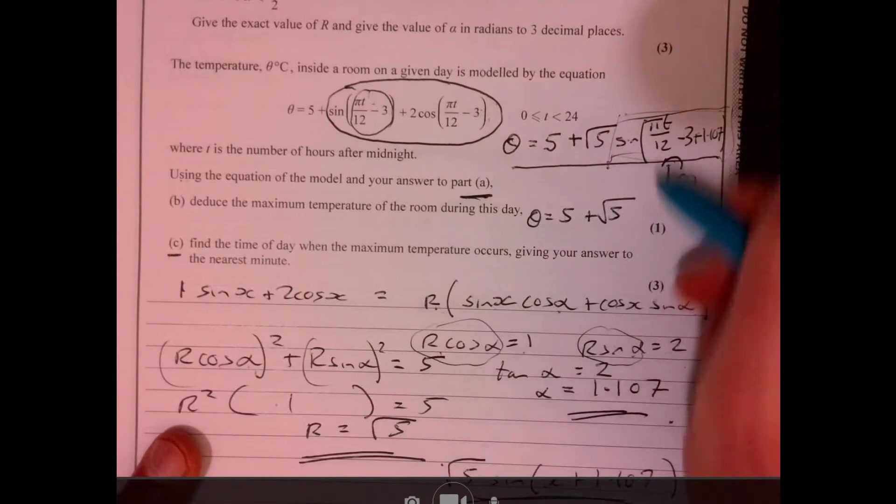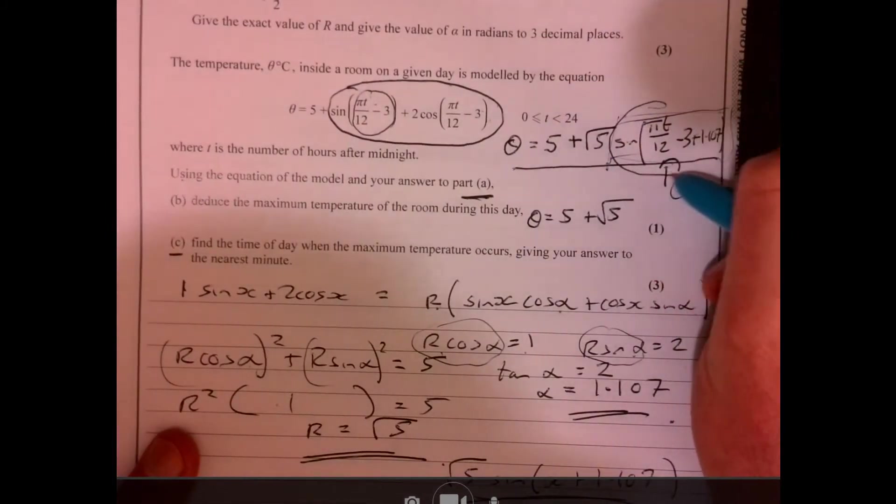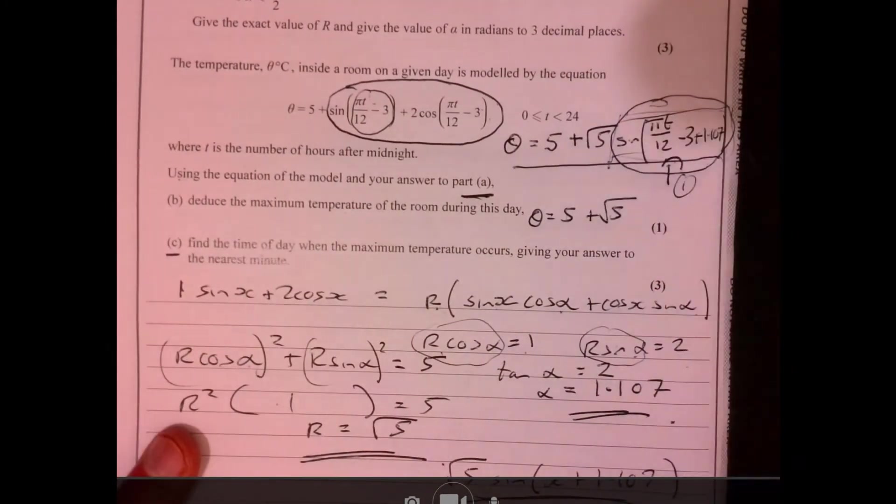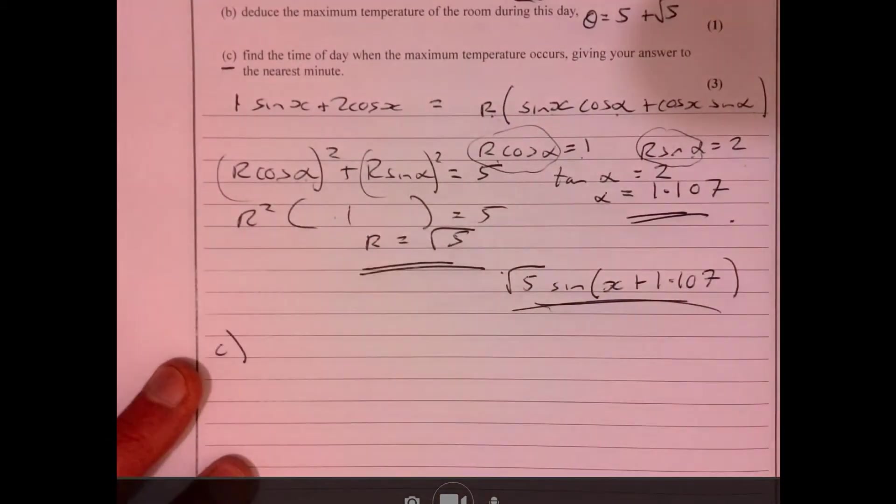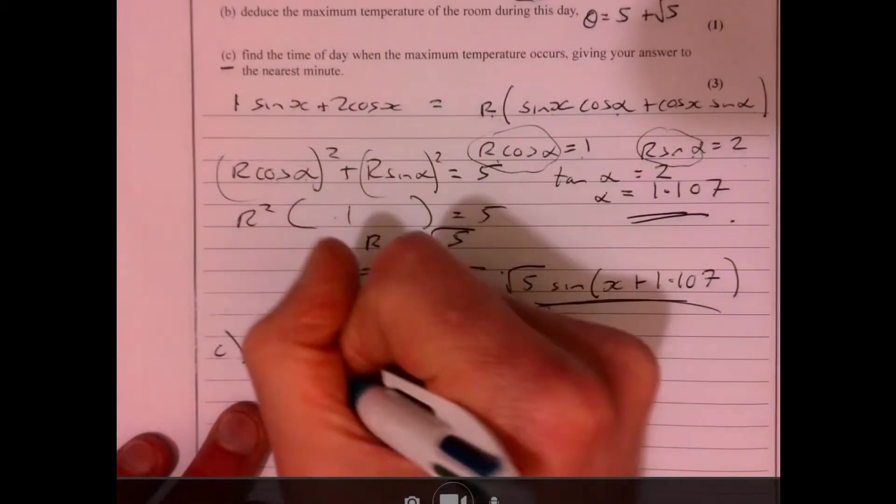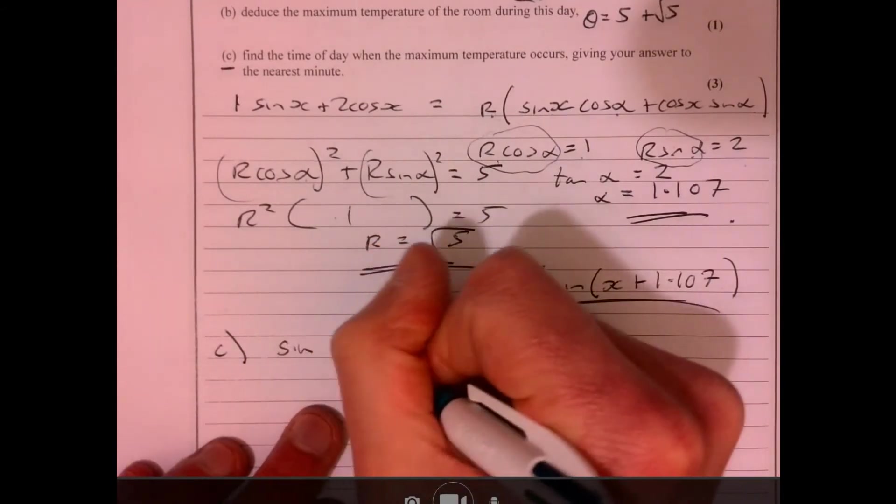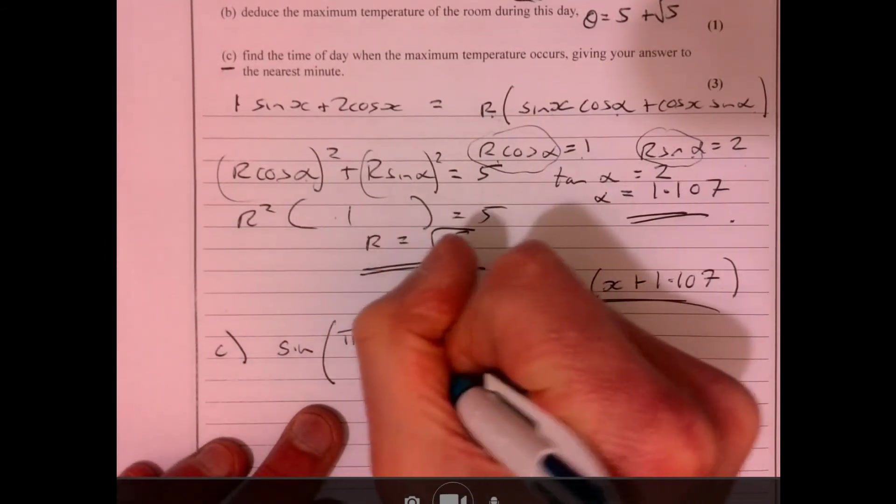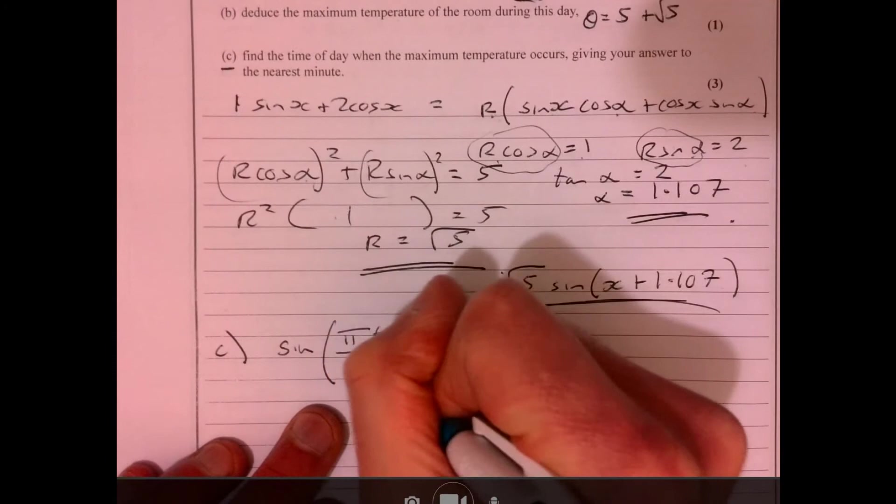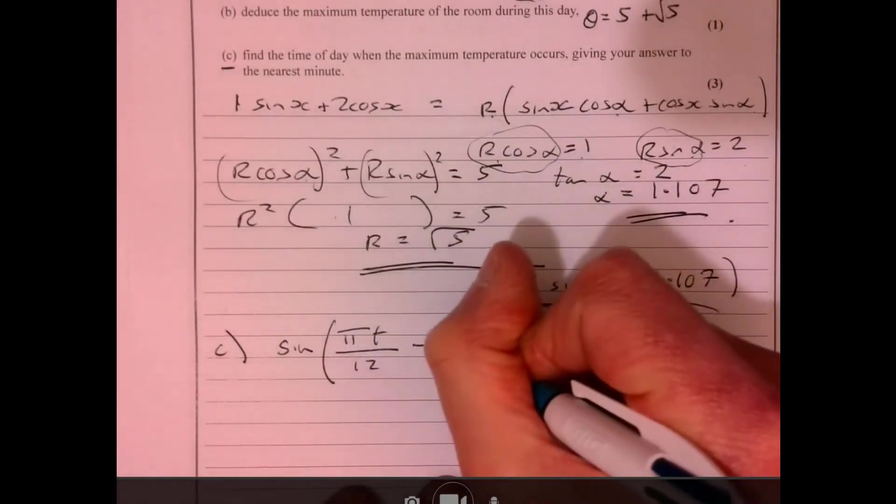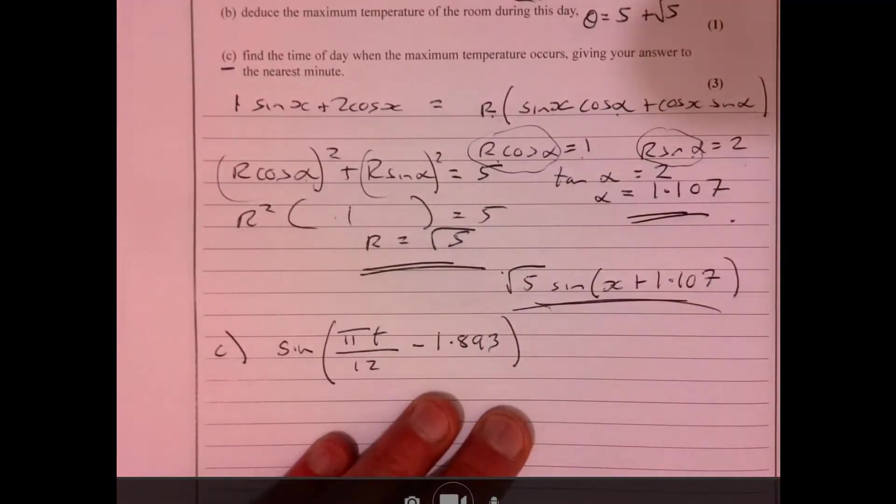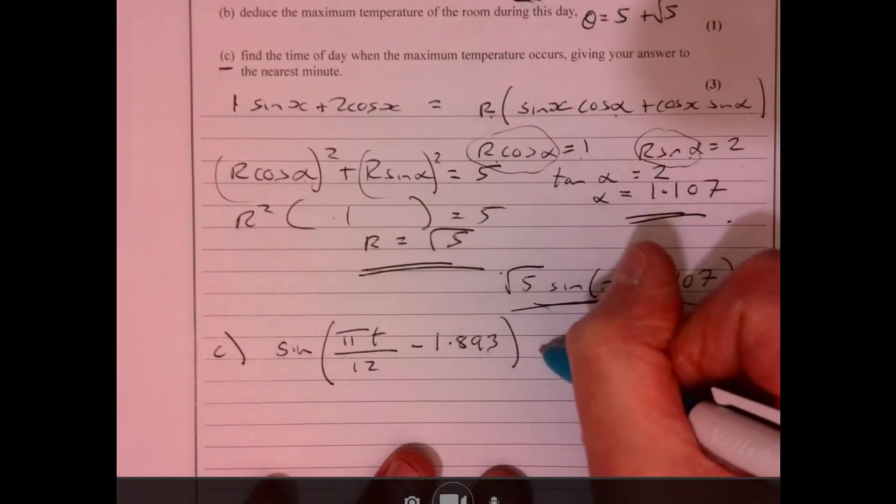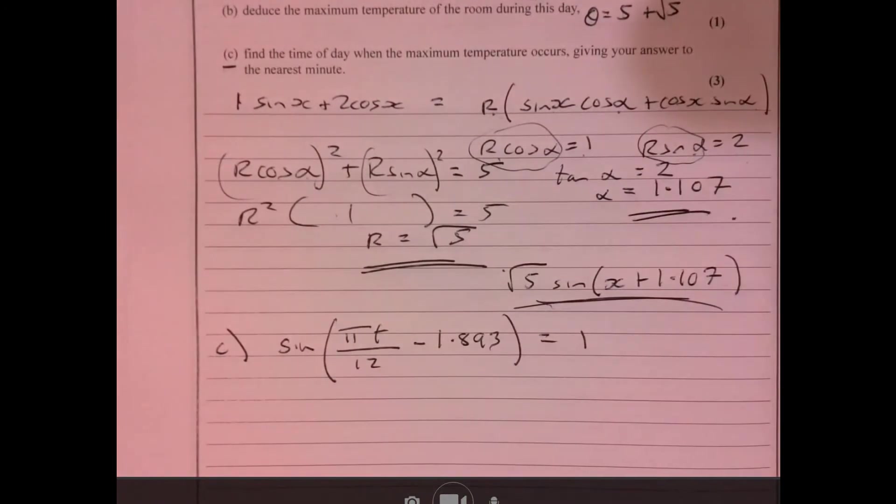Now that leads us to part c. Part c is when is this bit here actually going to equal one. So what we're interested in is when sine of pi t over 12 minus 1.893, so that's that minus 3 plus 1.107, equals 1.